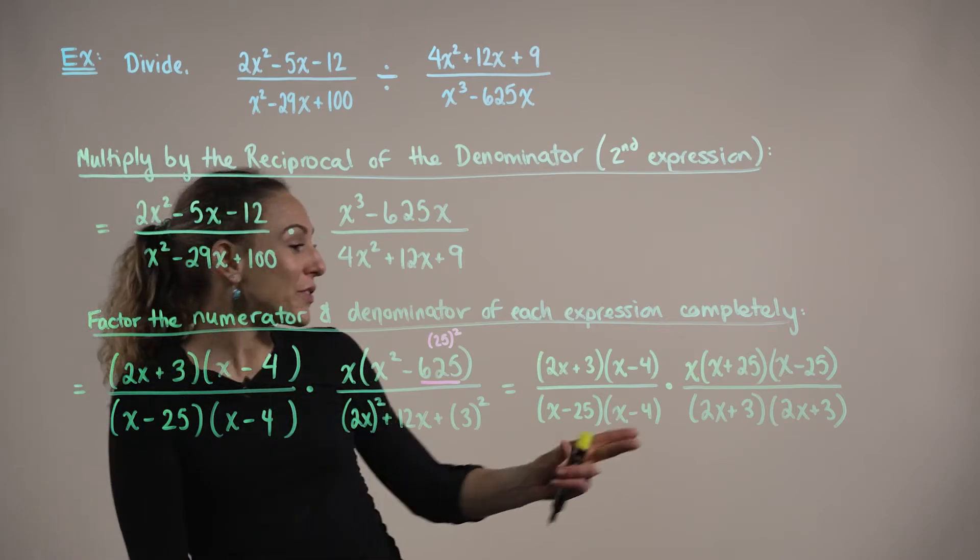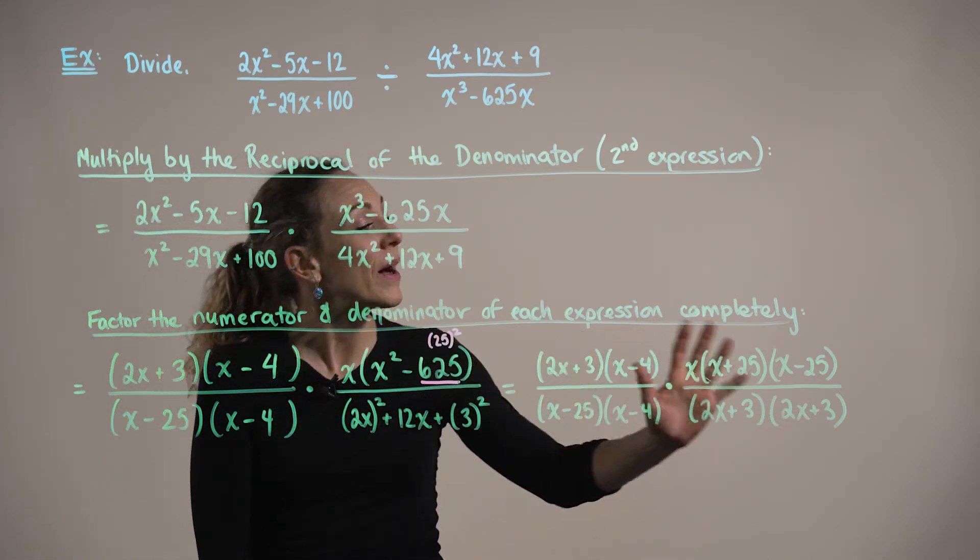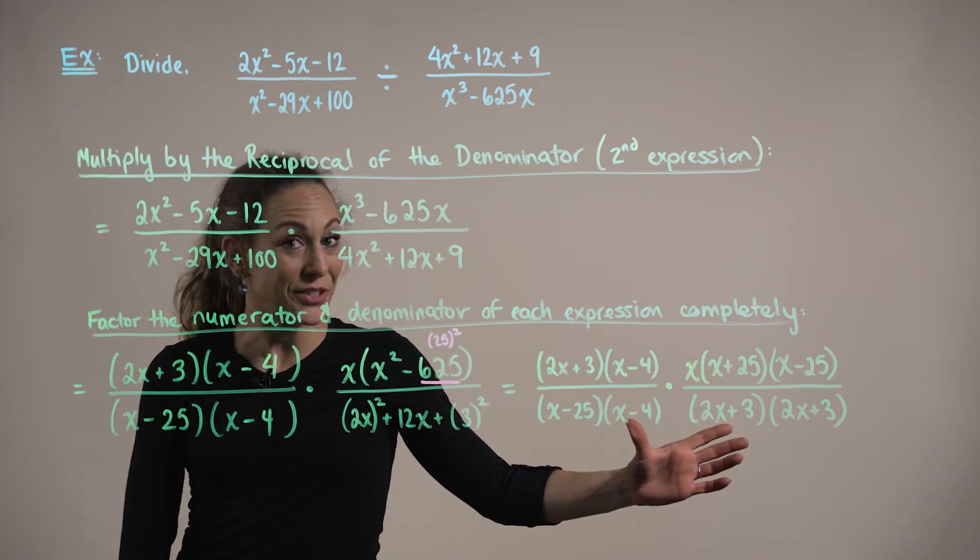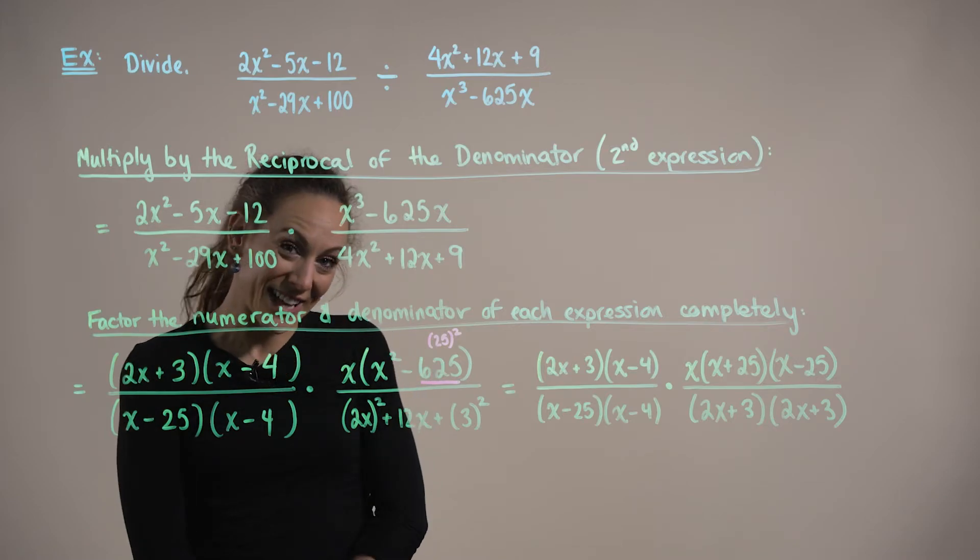So now that we have finished factoring both terms completely, we're ready to simplify by combining this product of two rational expressions to a single rational expression, and then canceling our like terms.